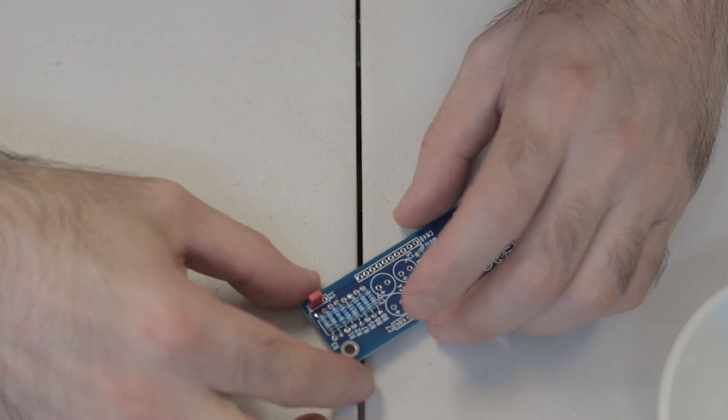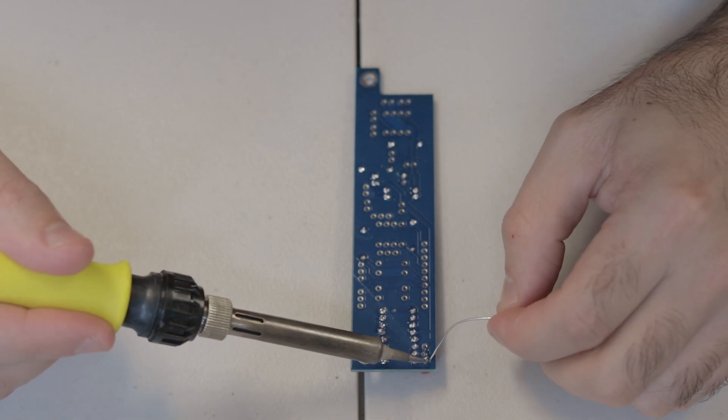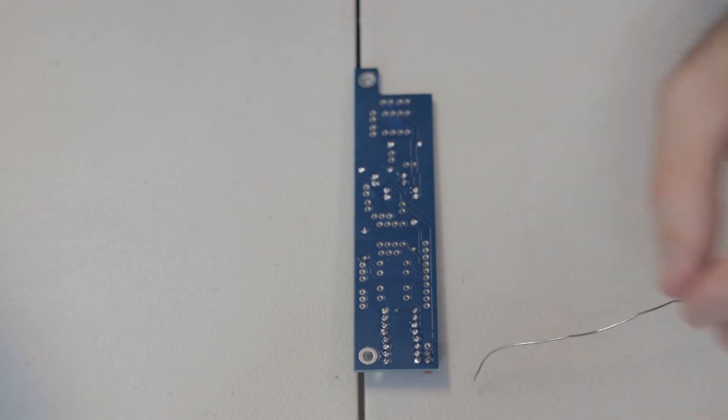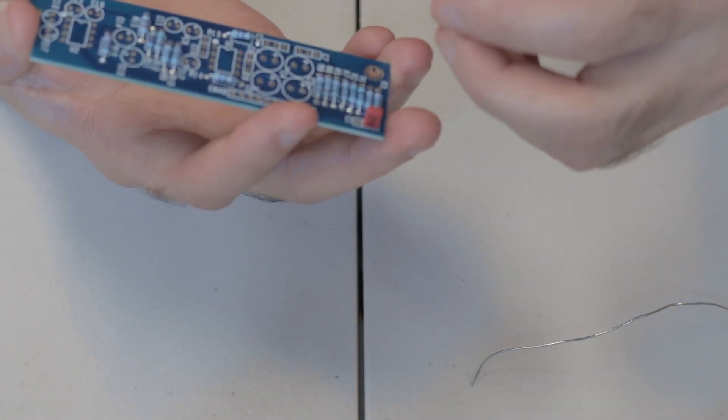And then we've got to put in these little film capacitors. There's two of them. So with the film capacitors, like we've talked about before, hold them in place and then solder one leg and then solder the other leg. Once you've checked the orientation and make sure that they're in nice and neat.